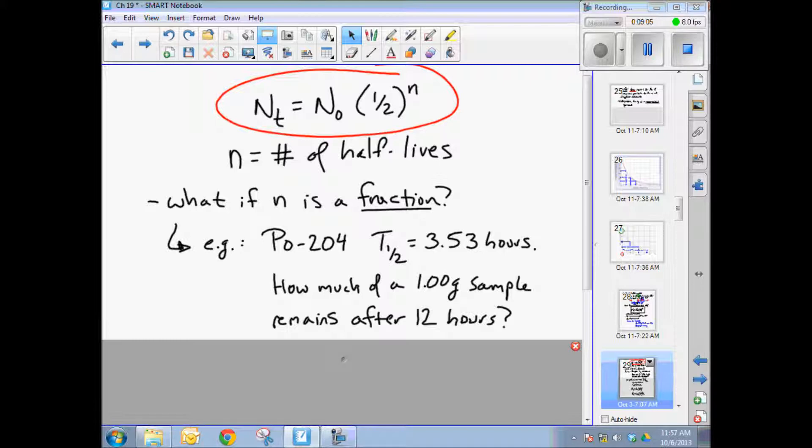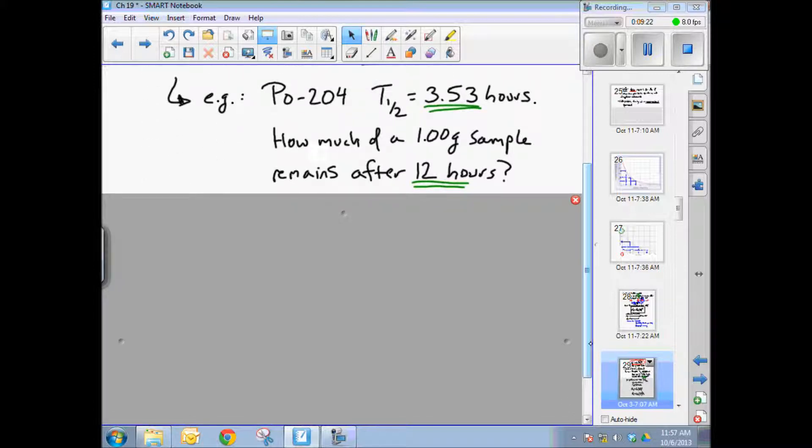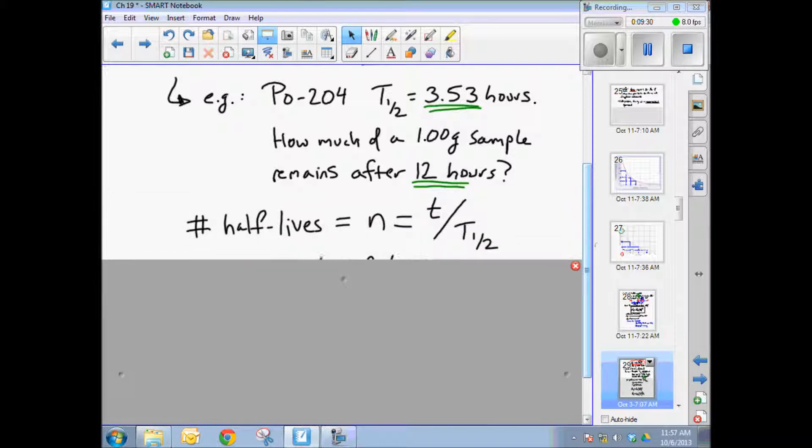You can see that this is not going to divide in a very beautiful, pretty round number fashion, 12 hours and 3.53 hours per half lives. So how many half lives have we gone through? Well, that's pretty simple to solve. We just take total elapsed time, 12 hours, and divide by the time per half lives, 3.53 hours. And we get this formula right here.